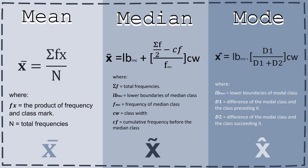First one is the mean. Mean is expressed through the formula x equals the summation of fx over n, where fx is the product of frequency and class mark, and n is the total frequencies in the table.